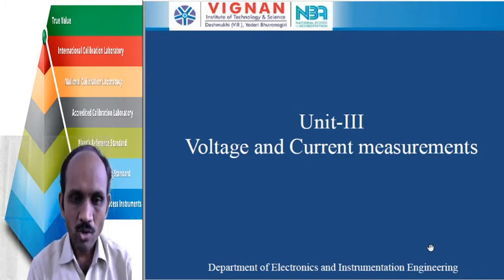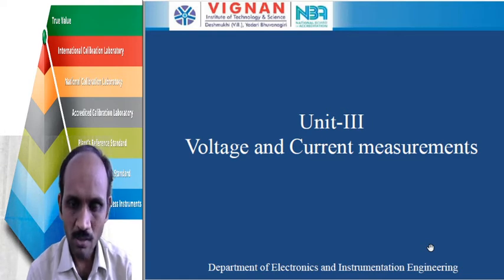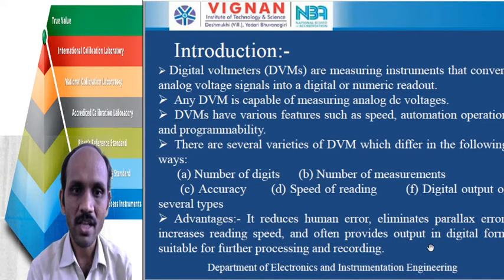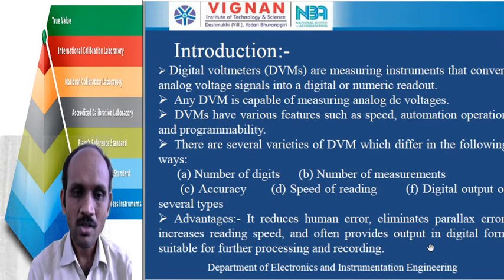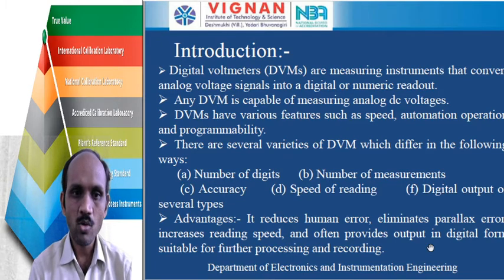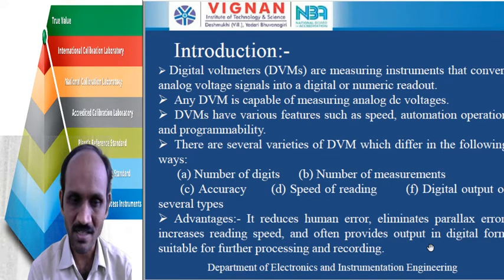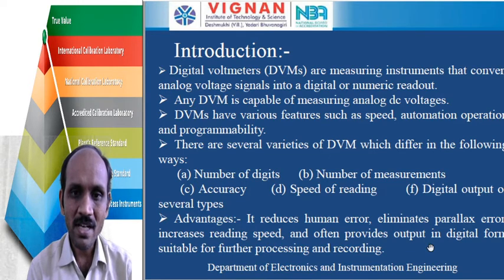Good morning. Today in this class we will see what is voltage measurement and what is current measurement. Voltage can be measured by the popular instrument called the voltmeter. The voltmeter is of two types: analog and digital. Today we will see what is a digital voltmeter or DVM and what are the different types of DVMs and the principle of operation of all digital voltmeters.